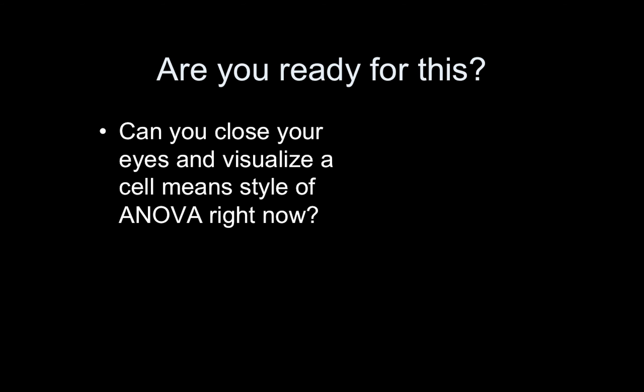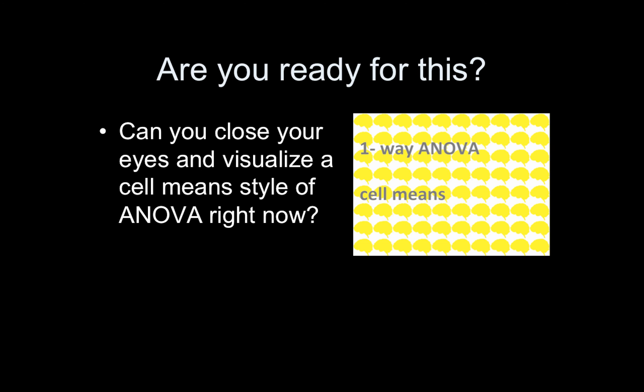Make sure you're ready for this. Can you close your eyes and just instantly visualize the cell means style of model for a one-way ANOVA? It should come to you automatically by now. If not, please revisit the one-way ANOVA. Specifically, I want you to focus on the contrasts that were set up — particularly the contrast to test the main effect, which I've called A, the main A effect.